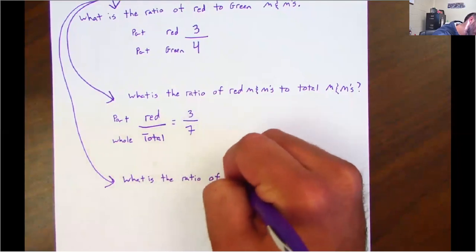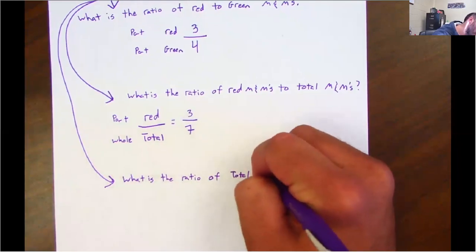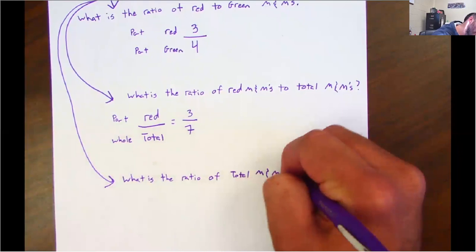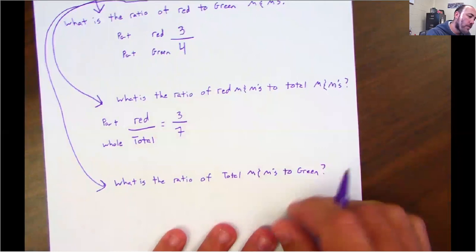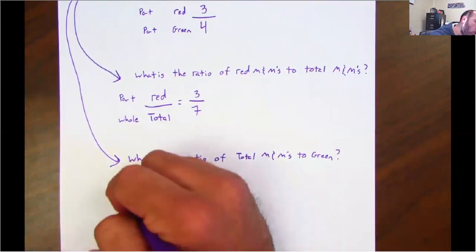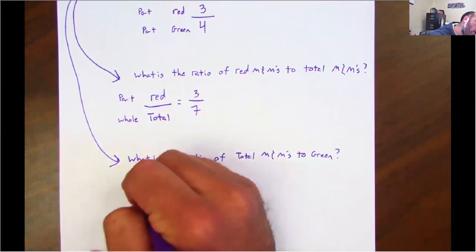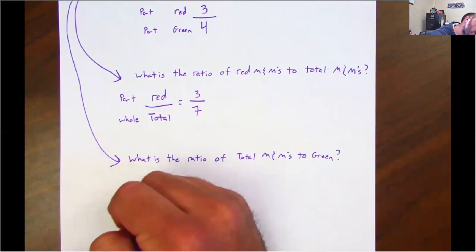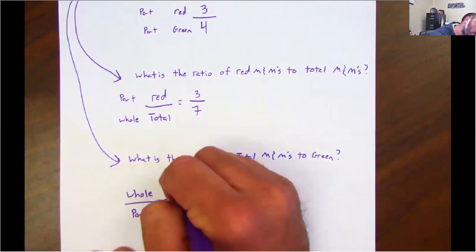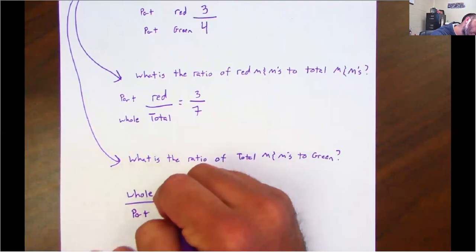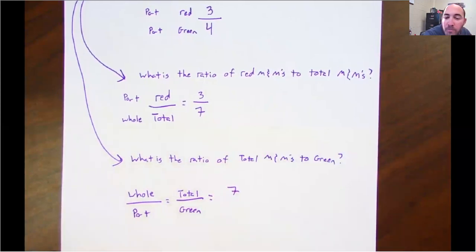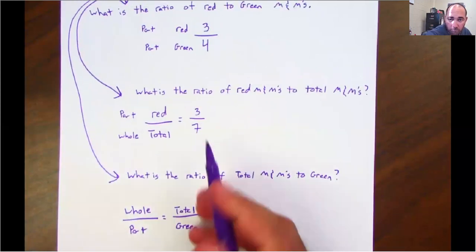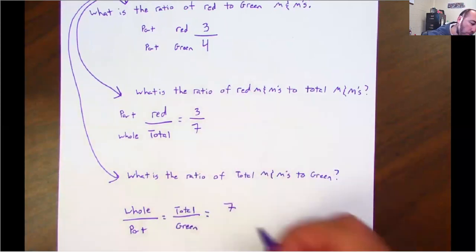So this time I'm taking the whole over a part. How many total M&Ms did I have? I had seven. How many of them were green? Well, I had four of them that were green.